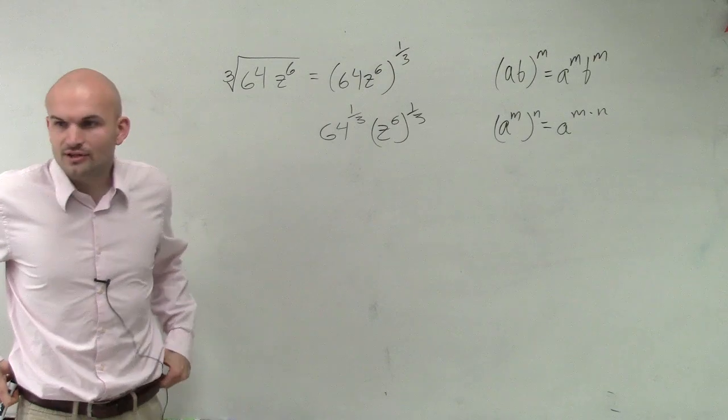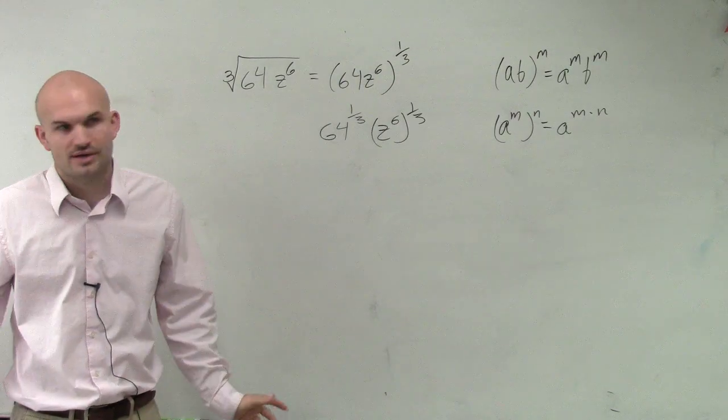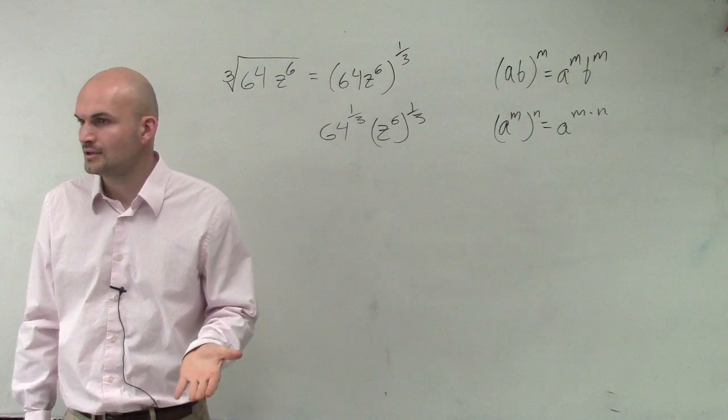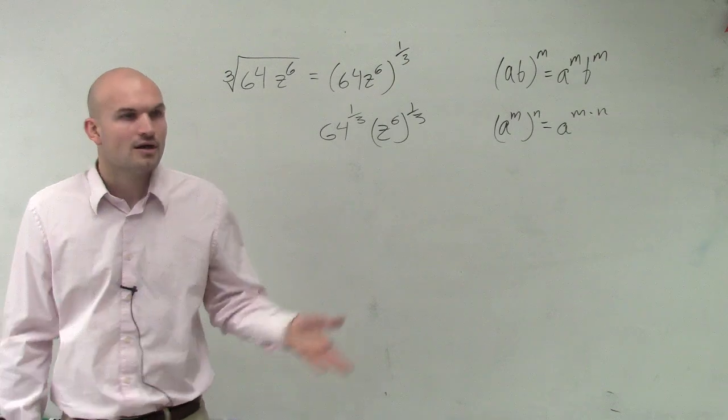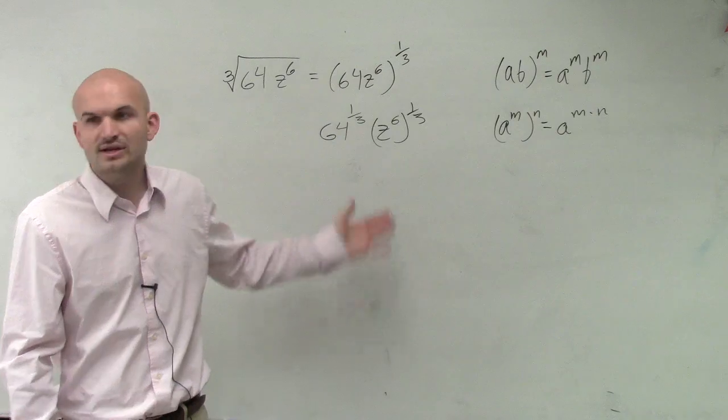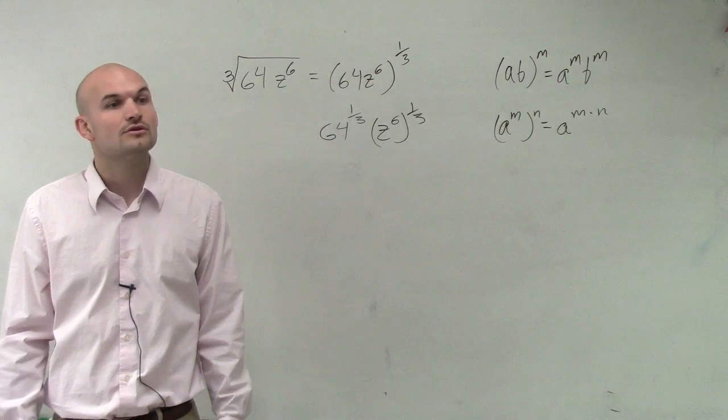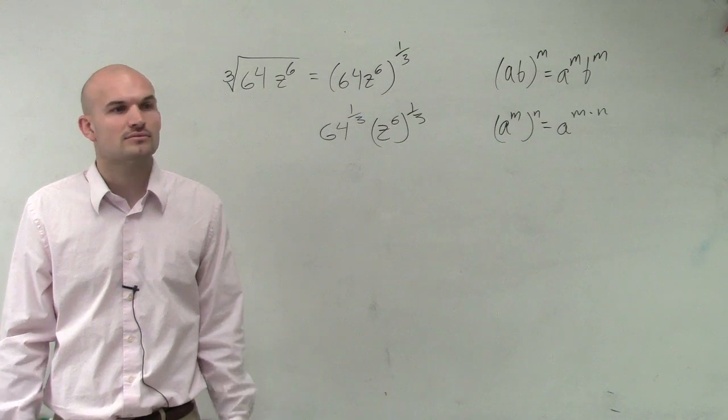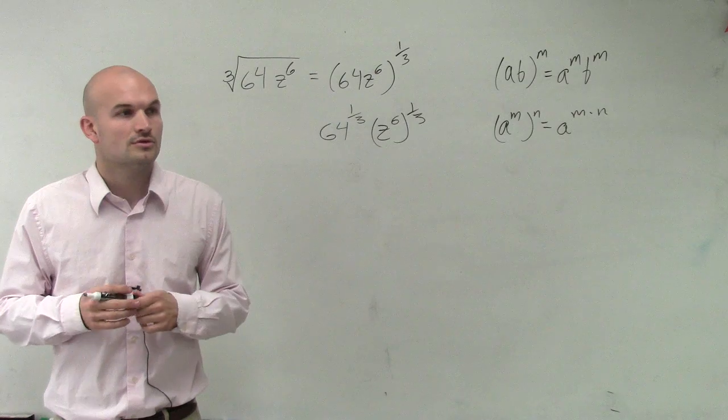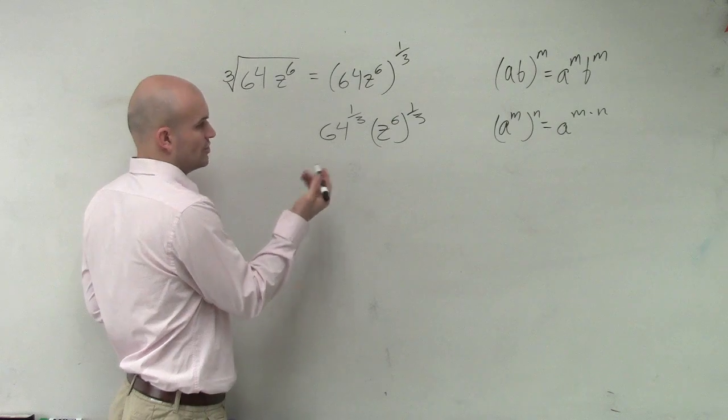All right, now, if you have a calculator and you want to do the cube root of 64, that's awesome. Do it. However, if you get a little stuck on the cube root of 64, always try to see, can I rewrite this as a number raised to a power? And what is 64 the same as? You could raise 64 as what? What's another base raised to an exponent? What could you do? You could do 8 squared. Or you could do 4 cubed.